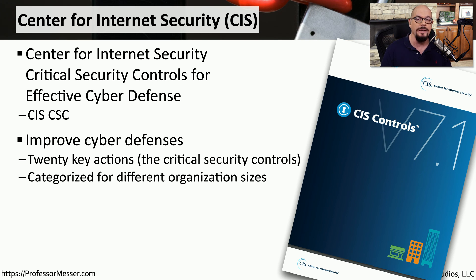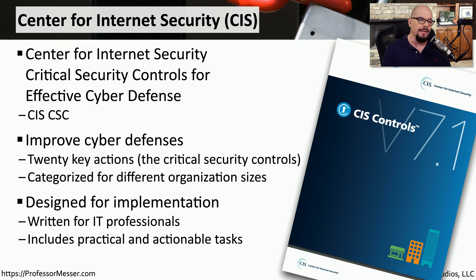The CIS-CSC is designed to help you improve the security posture of your organization, and these are focused into critical security controls in 20 different areas. Another nice feature of this framework is that there are different recommendations depending on the size of the organization, because smaller organizations will have different requirements than large organizations. The CIS-CSC is written by technologists so that it can be implemented by technologists, containing practical information you could apply to a project and begin implementing these controls in your environment.